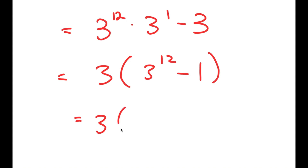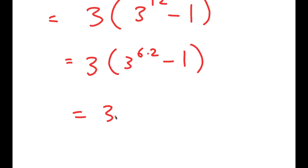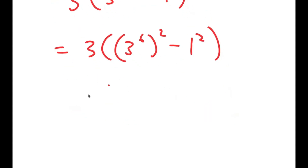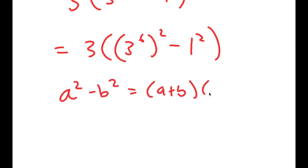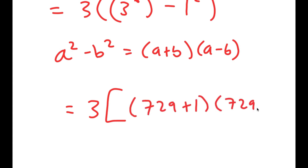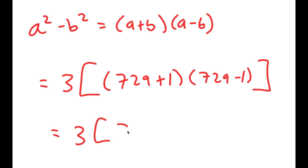Now 3 to the power of 12, I'm going to rewrite as 3 to the power of 6 times 2, and that's equal to 3 times 3 to the power of 6 to the power of 2 minus 1 squared. I'm writing this like this because now I can use the property a squared minus b squared is equal to a plus b times a minus b. So this turns into 3 times 729 plus 1 times 729 minus 1, which is equal to 730 times 728.